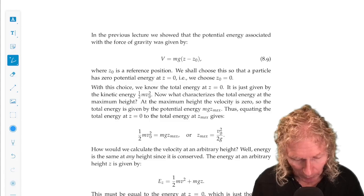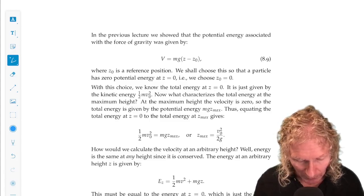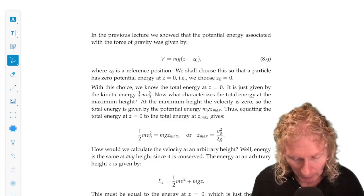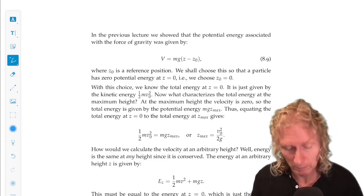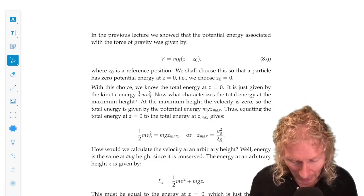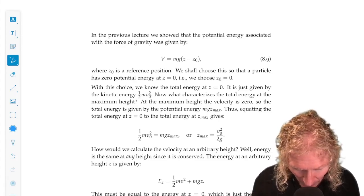The potential energy we saw previously is mg z minus z naught, and we're going to assume that the potential energy is zero at the origin, on the ground, and so we can pick z naught equals zero.